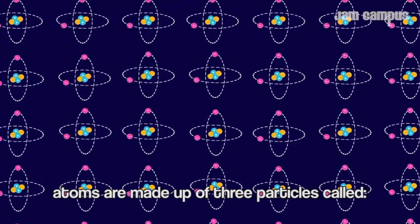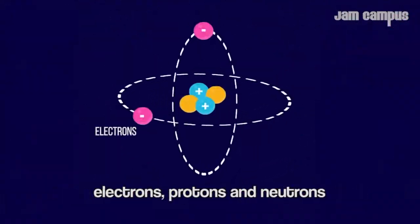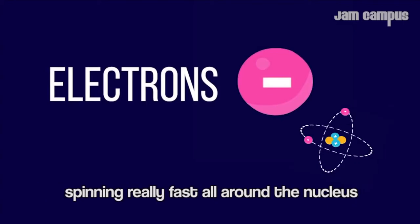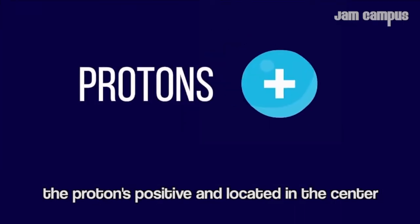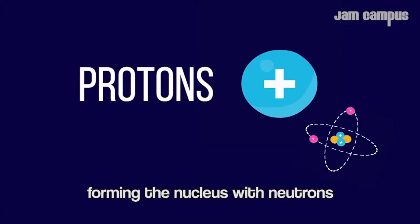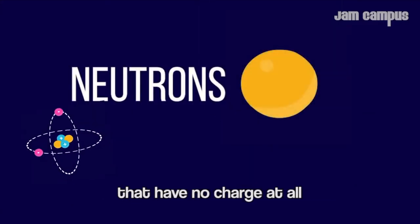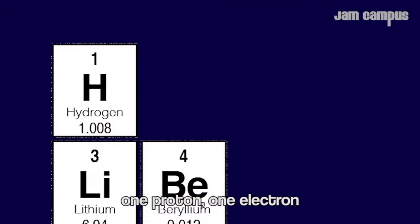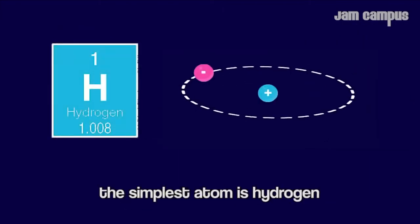Atoms are made up of three particles called electrons, protons, and neutrons. Electrons are the smallest, their charge is negative, spinning really fast all around the nucleus. The proton's positive and located in the center, forming the nucleus with neutrons that have no charge. One proton, one electron - the simplest atom's hydrogen.